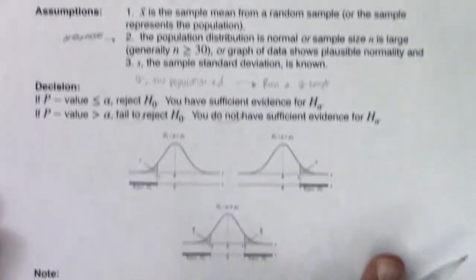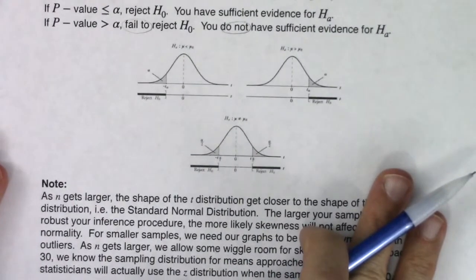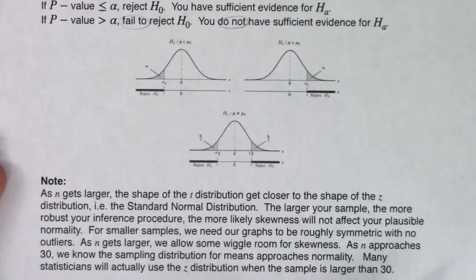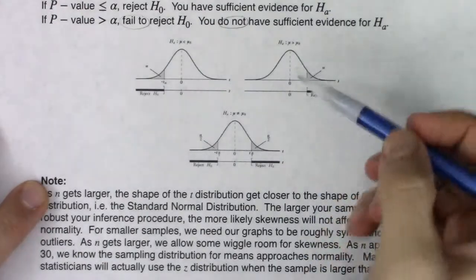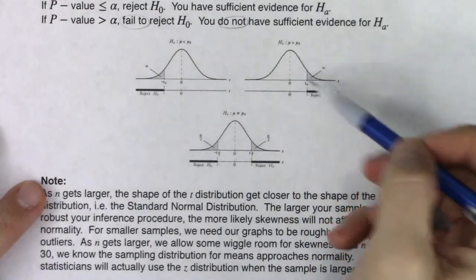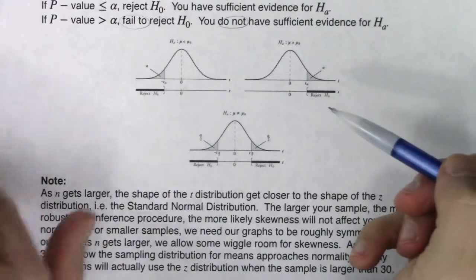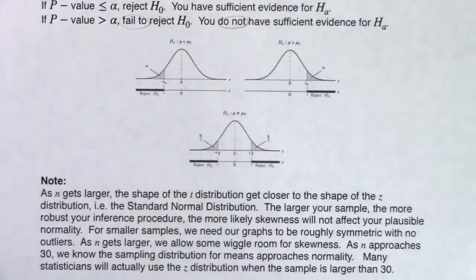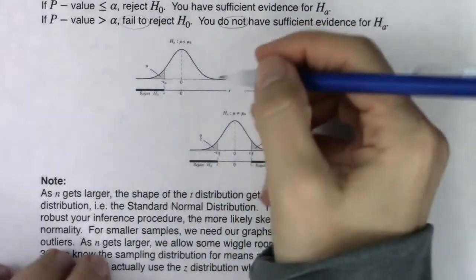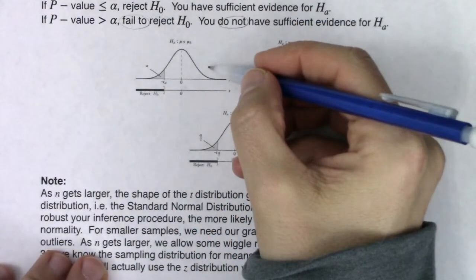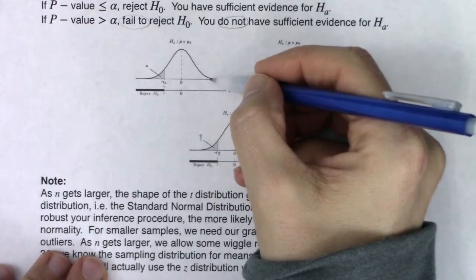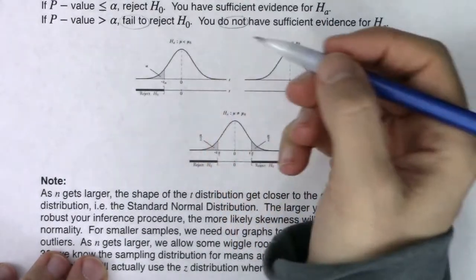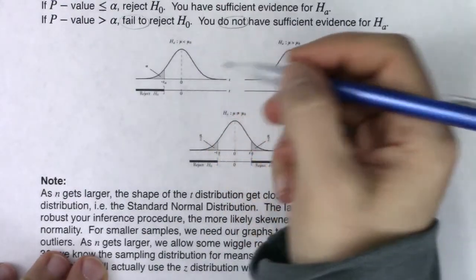We're going to draw a picture just like last time. This time we're on the t-distribution, not the z-distribution — graphs that look like the z-curve but have slightly higher tails and a lower peak. As the degrees of freedom increase, the tails get closer and closer to the z-curve and the peak raises up to match the z-curve.